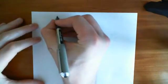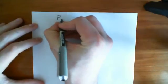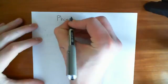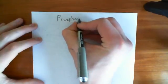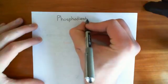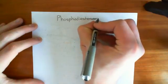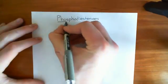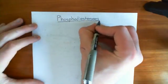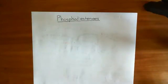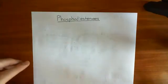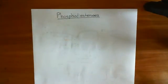Welcome to this next video in the playlist on cyclic AMP signaling. In this video, we're going to look at phosphodiesterase enzymes in more detail than we've ever looked at them before. We're going to look at all the different types of phosphodiesterases, the reaction that they catalyze, and specifically phosphodiesterase 1 and phosphodiesterase 4. We'll start by looking at the reaction that all phosphodiesterases catalyze, which is the phosphodiesterase reaction.